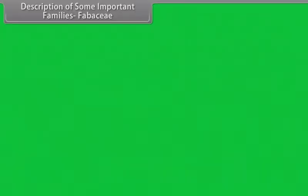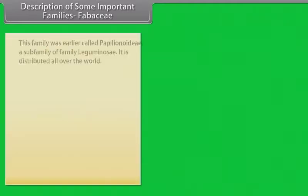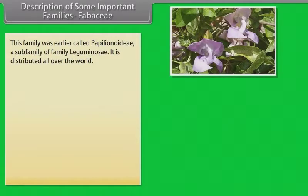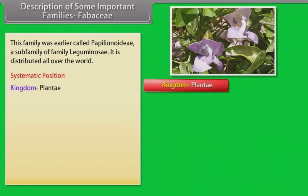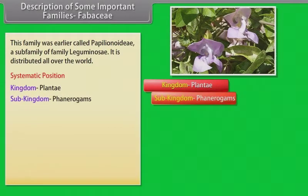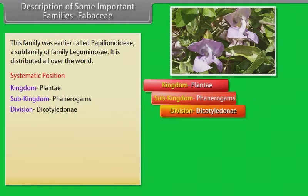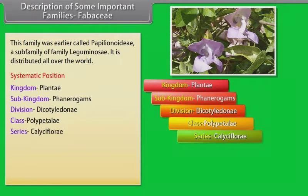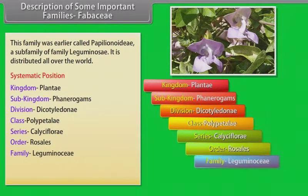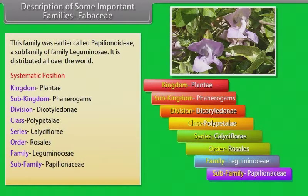Fabaceae: this family was earlier called Papilionaceae, a sub-family of family Leguminosae. It is distributed all over the world. Systematic position: Kingdom Plantae, Sub-kingdom Phanerogams, Division Dicotyledoni, Class Polypetali, Series Calyciflorae, Order Rosales, Family Leguminosae, Sub-family Papilionoideae, Family Fabaceae.